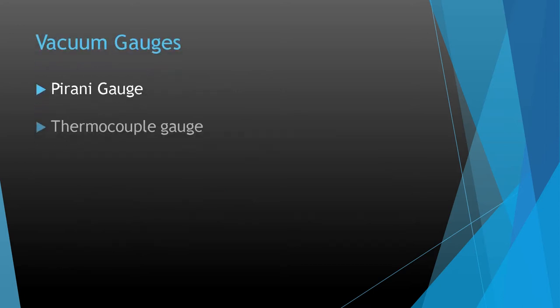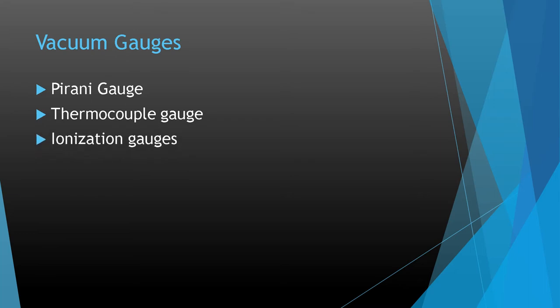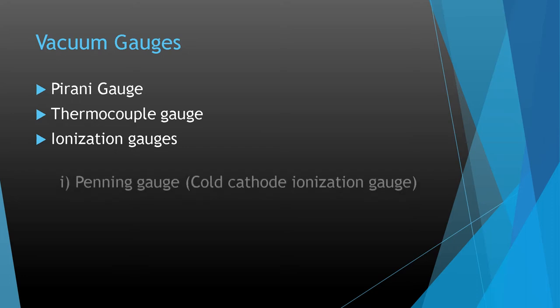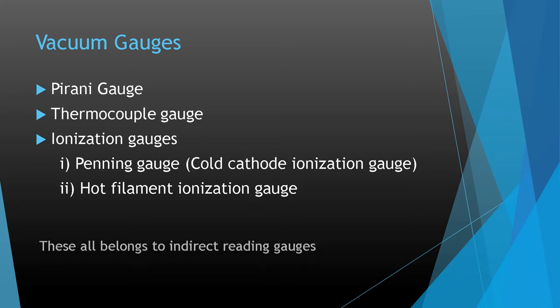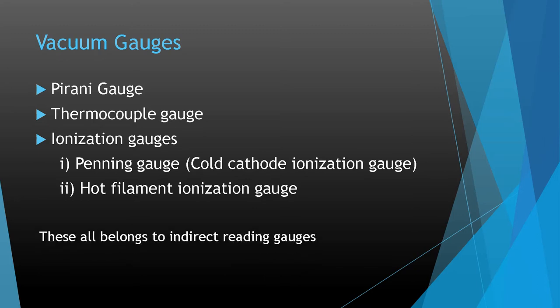We will discuss three types of indirect vacuum gauges: the Pirani gauge, the thermocouple gauge, and ionization gauges. There are two types of ionization gauges — the Penning gauge, also known as the cold cathode ionization gauge, and the hot filament ionization gauge. All of these belong to the indirect reading gauge category.